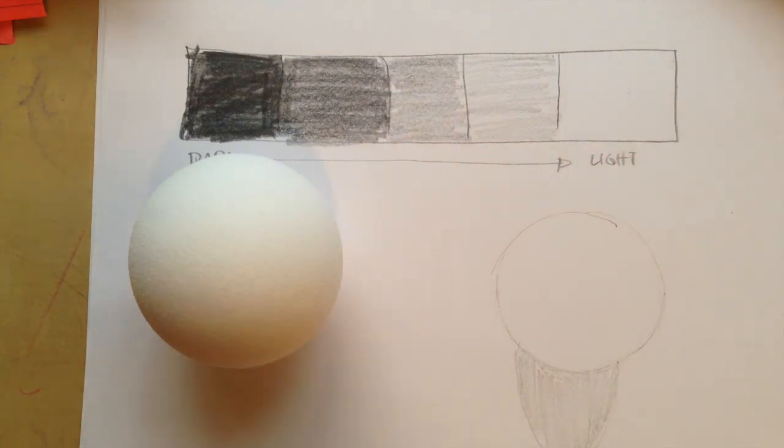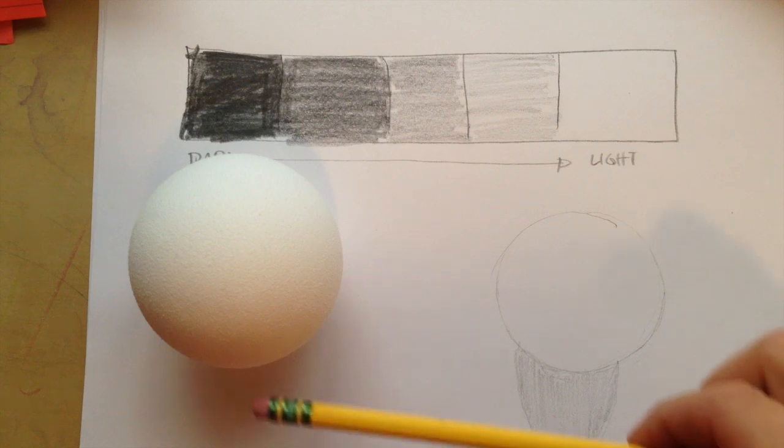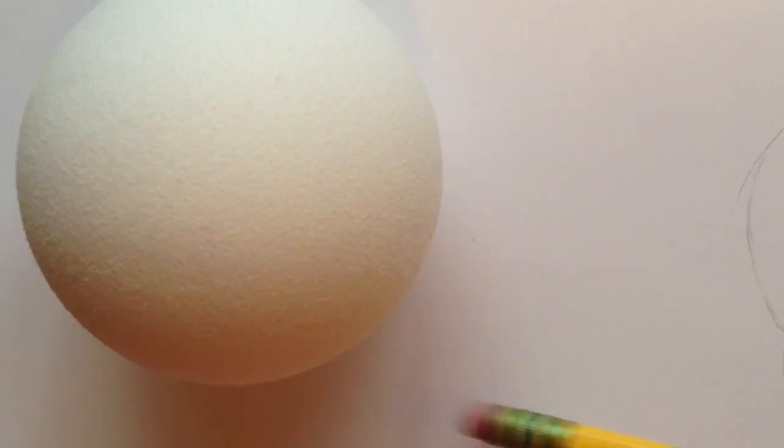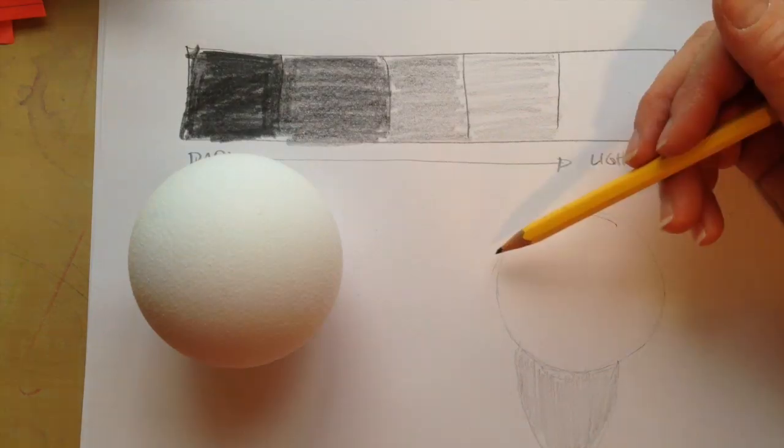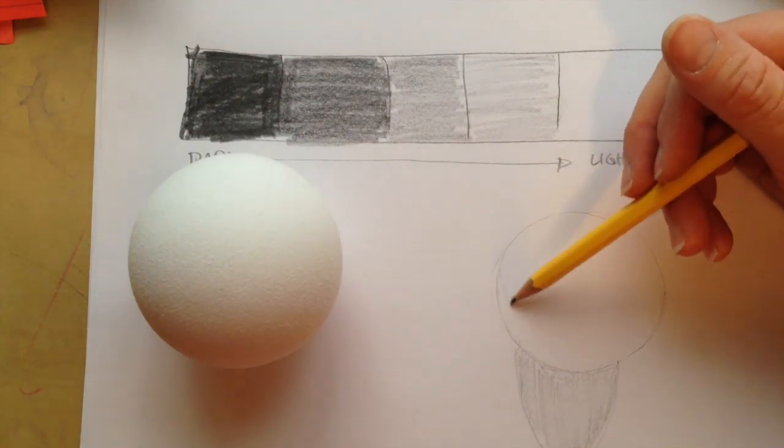And reflected light would be light that bounces off of something back into it. So there's light on the table right now that's coming from my window, but it's bouncing up right onto this sphere right here. That's reflected light. I like to just draw a crescent right here.